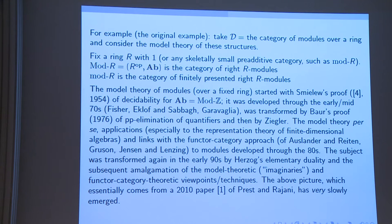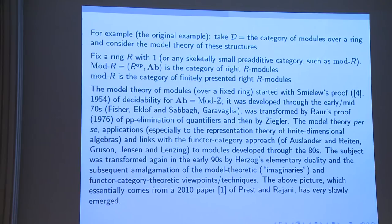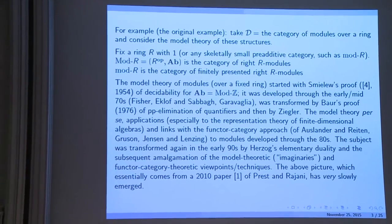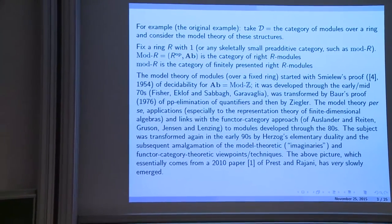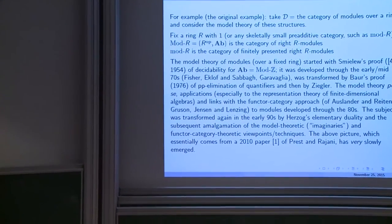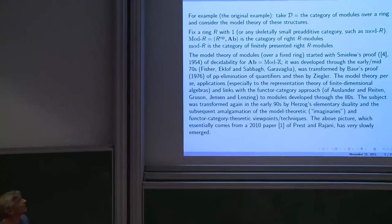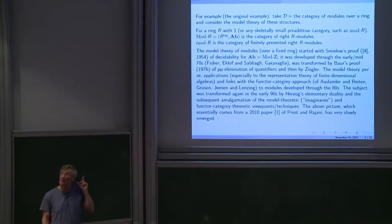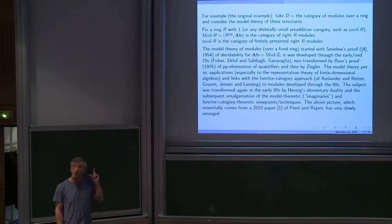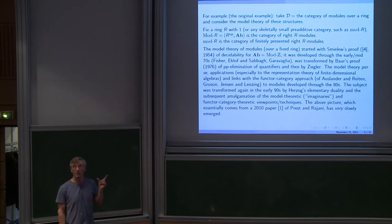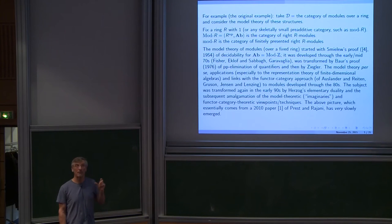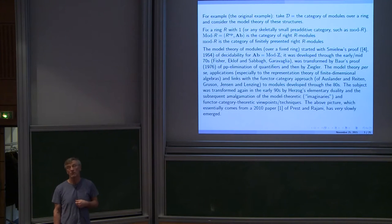This is all coming from the model theory of modules, which started with Szmielew's proof of decidability for abelian groups. There were developments in the seventies, and then particularly Baur proved PP elimination of quantifiers, which I'll state. That vastly simplified a lot of the existing proofs and allowed a lot more developments in the context of the model theory of modules.